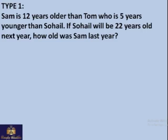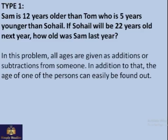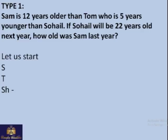The first type — the easiest one — is given here: Sam is 12 years older than Tom, who is 5 years younger than Sohail. If Sohail will be 22 years old next year, how old was Sam last year? In this problem all ages are given as additions or subtractions. At least one age can easily be found out — Sohail will be 22 next year. This is the first type of age problem.